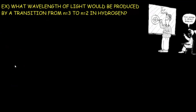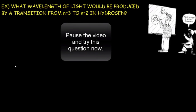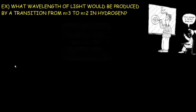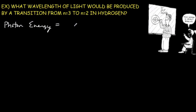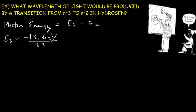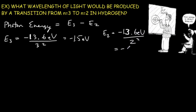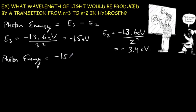Let's work out the wavelength of light produced from a transition from n equals three to n equals two in hydrogen. The photon energy has to equal the difference in the two energy levels, so it's E3 minus E2. E3 is negative 13.6 eV divided by three squared, which comes out to negative 1.5 eV. E2 is negative 13.6 eV divided by two squared, which comes out to negative 3.4 eV. So our photon energy will be negative 1.5 eV minus negative 3.4 eV, which comes out to a positive value of 1.9 electron volts.